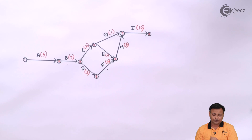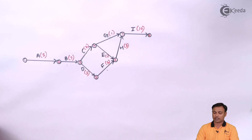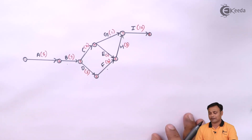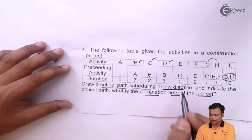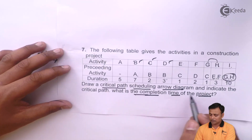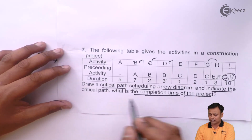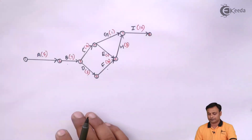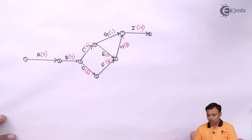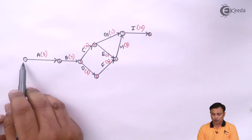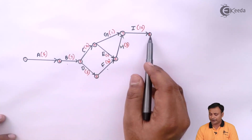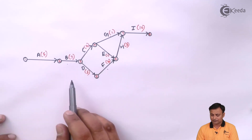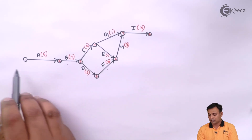Now we are asked to find the critical path and the overall project completion time. This can be done by trying to reach from the point of origin — the start — to the point of end, covering the different alternate routes on the diagram.